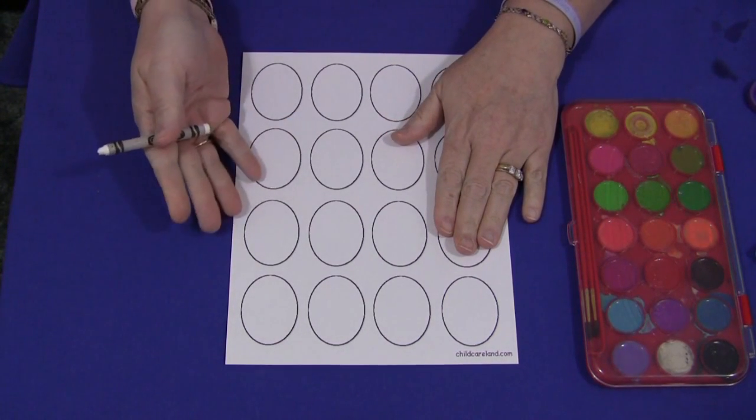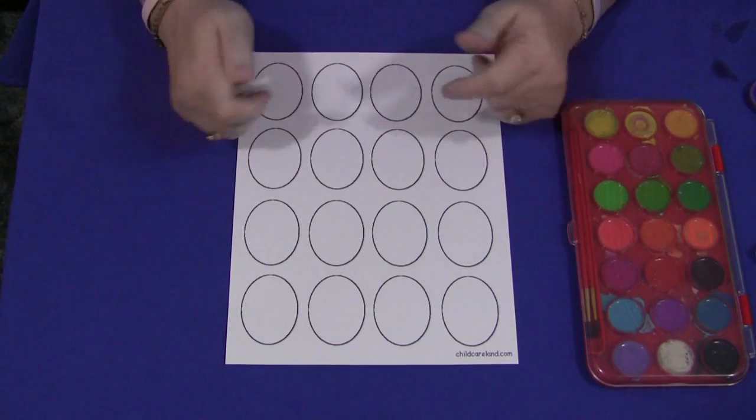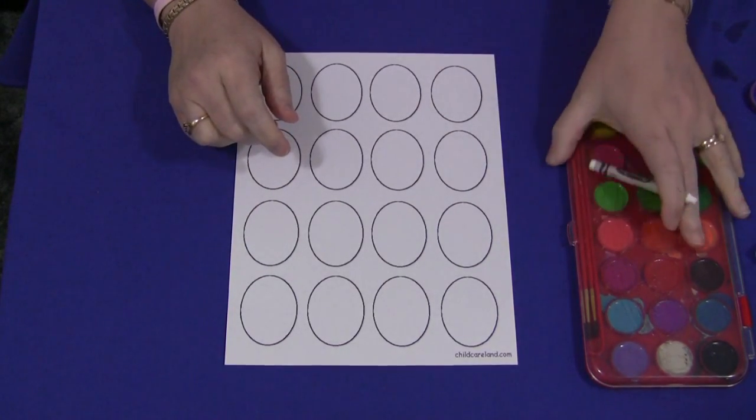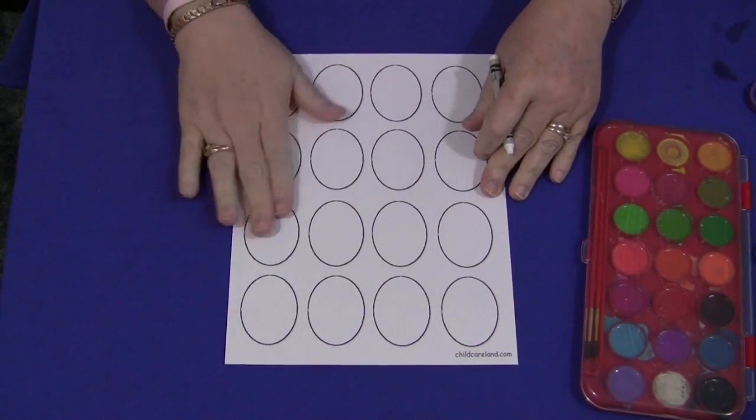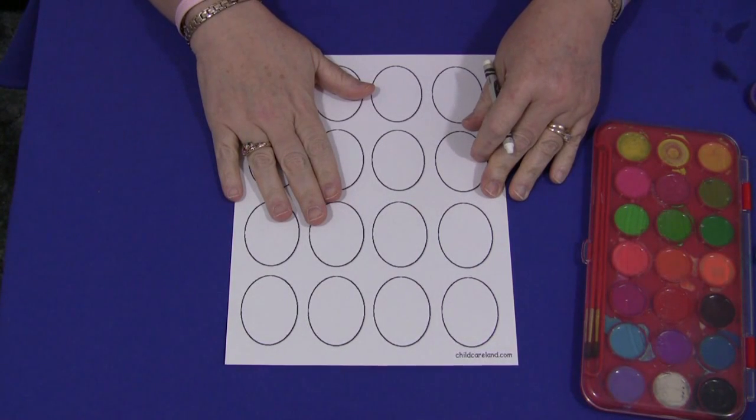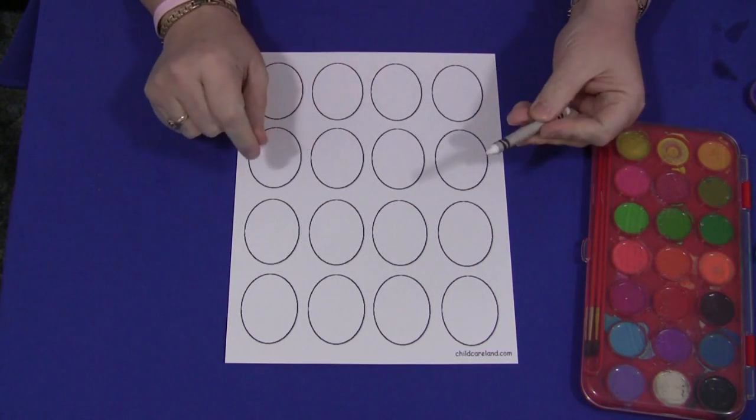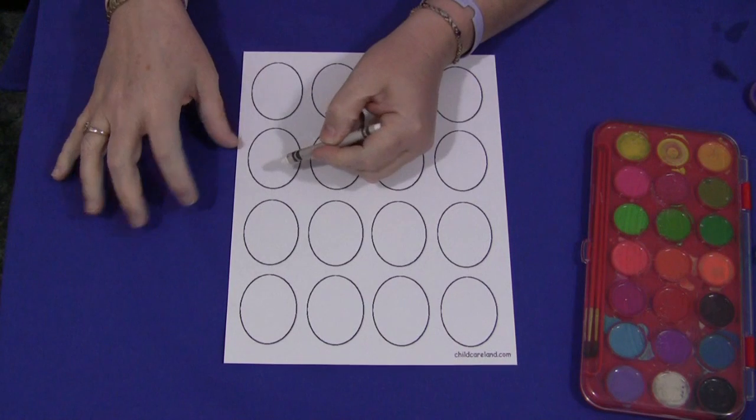So that could be cardstock paper which I recommend or construction paper. The first step that you would need to do is to print out this pattern on cardstock paper and children would get a white crayon in each side of the egg.